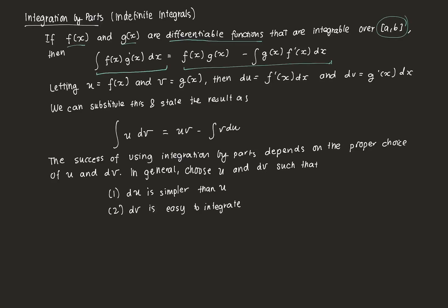So typically when we do integration by parts, we use this notation common in most textbooks: we let u = f(x) and we let v = g(x). Then the derivative of u is f'(x) dx, and the derivative of v is g'(x) dx. Our form is integral f(x)·g'(x) dx = f(x)·g(x) minus integral g(x)·f'(x) dx.